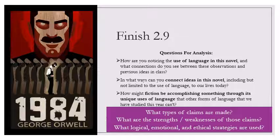I'd like to add these three questions to consider for this particular reading. So what types of claims are being made in the Emanuel Goldstein book? What are the strengths and weaknesses of those claims? And then what logical, emotional, or ethical strategies are being used to support those claims. I think this will be a good review on argumentation. So with that said, let's get started on this reading.